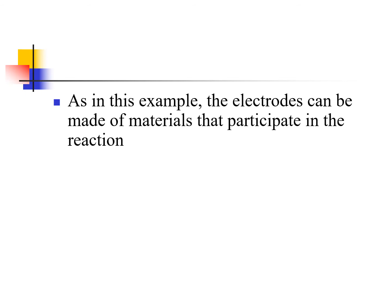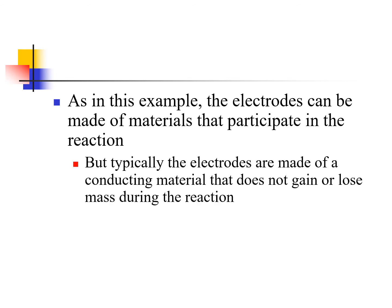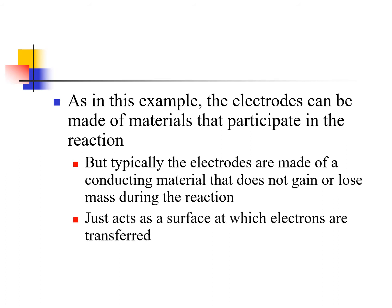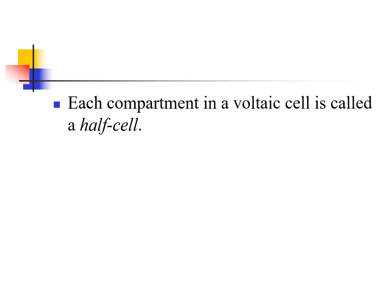As in the example with zinc and copper, the electrodes are often made of the materials that participate in the reaction. But in many commercial products like car batteries, the electrodes are made of some conducting material that itself won't gain or lose mass during the reaction — it's just there to act as a conductor. A very common material would be graphite; in high-end batteries, they use platinum. Each component or compartment in the overall voltaic cell is called a half cell.